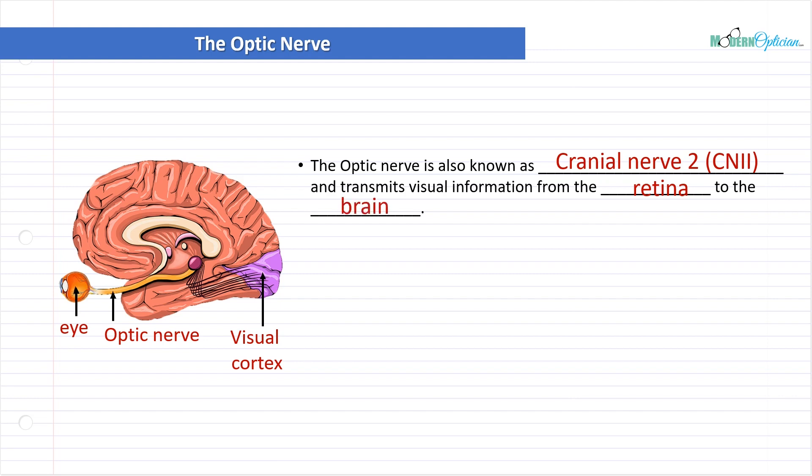So the optic nerve is also known as cranial nerve 2 and transmits visual information from the retina to the brain. The pathway, the highway if you will, from the eye to the brain. Though the optic nerve is classified as part of the 12 cranial nerves, it's technically an extension of the central nervous system.